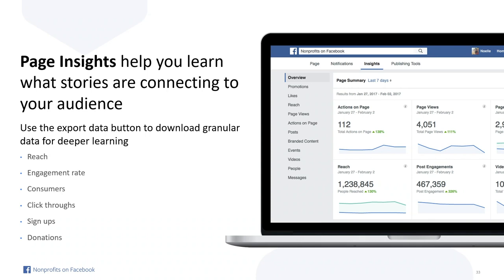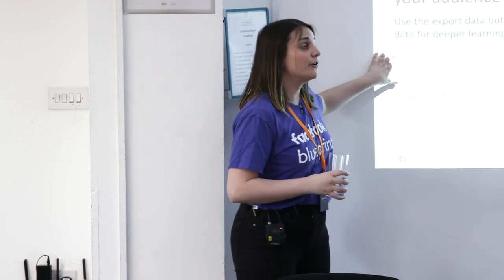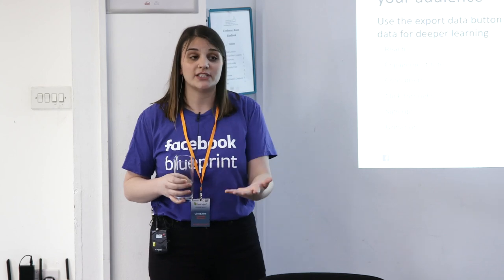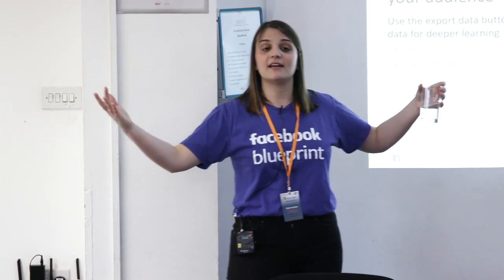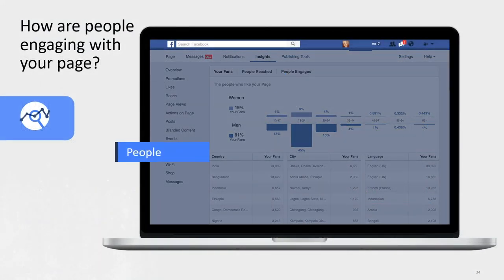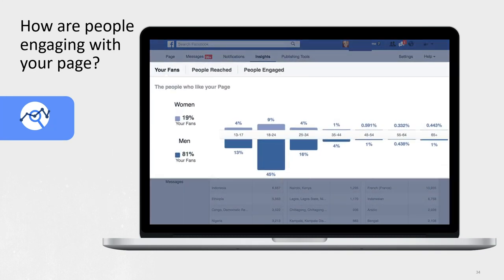Page Insights is a really interesting tool. It lets you look into your audience from your page — showing reach, engagement rate, click-throughs, sign-ups, donations — and you can export that data to analyze over time. If you click the People tab, it shows demographics of people who like your page: age, gender, and location. This is helpful if you need more insight into the kinds of people showing interest in your organization.